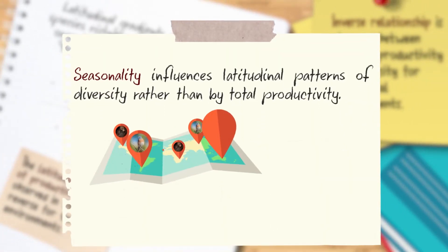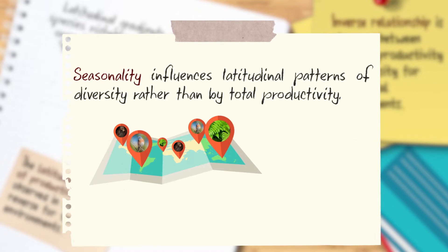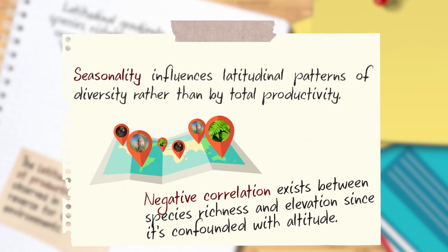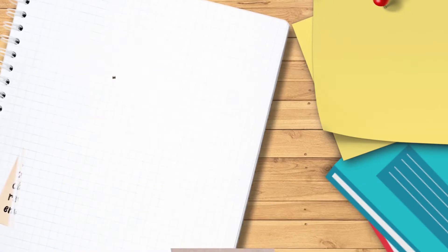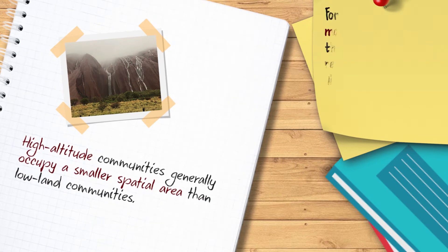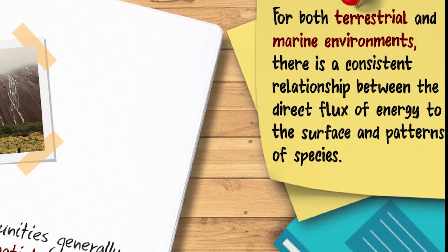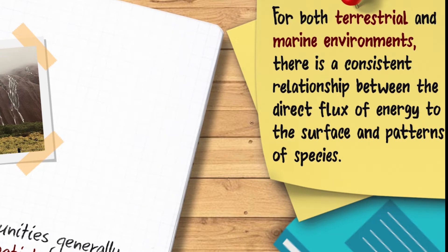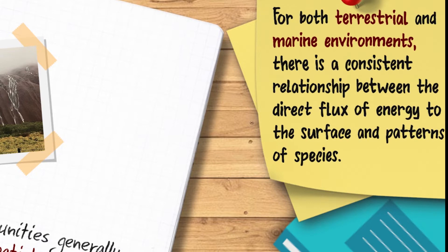Seasonality influences latitudinal patterns of diversity rather than total productivity alone. A negative correlation exists between species richness and elevation, confounded with altitude. High-altitude communities generally occupy a smaller spatial area than lowland communities. For both terrestrial and marine environments, there is a consistent relationship between the direct flux of energy to the surface and patterns of species richness.